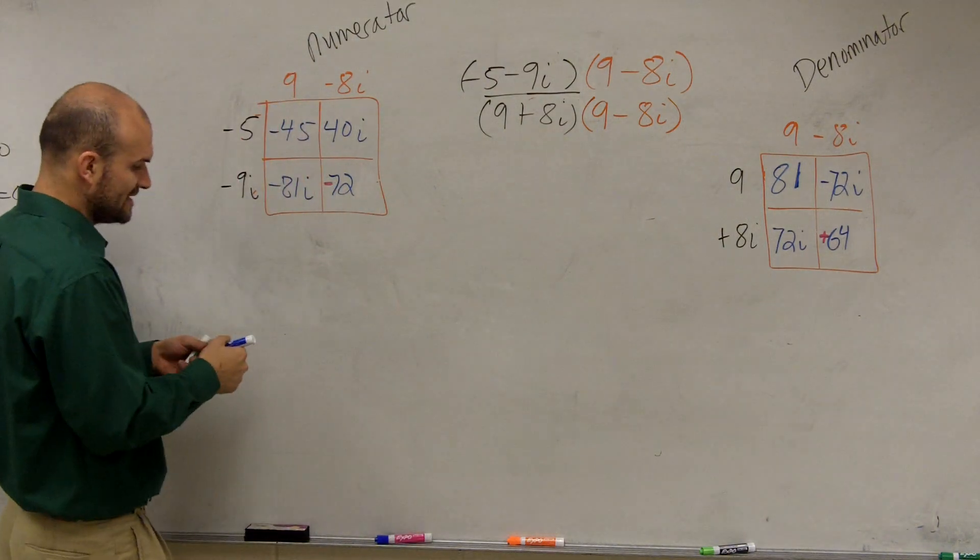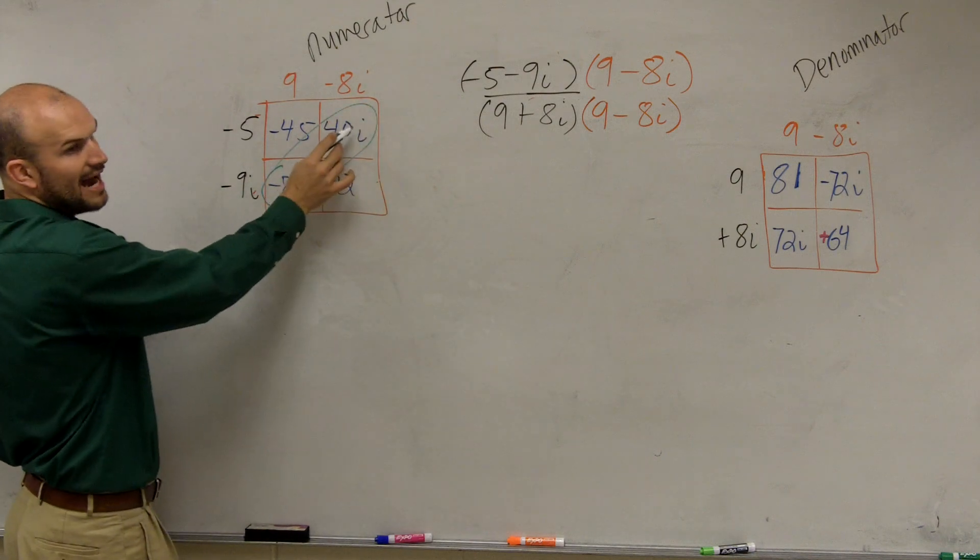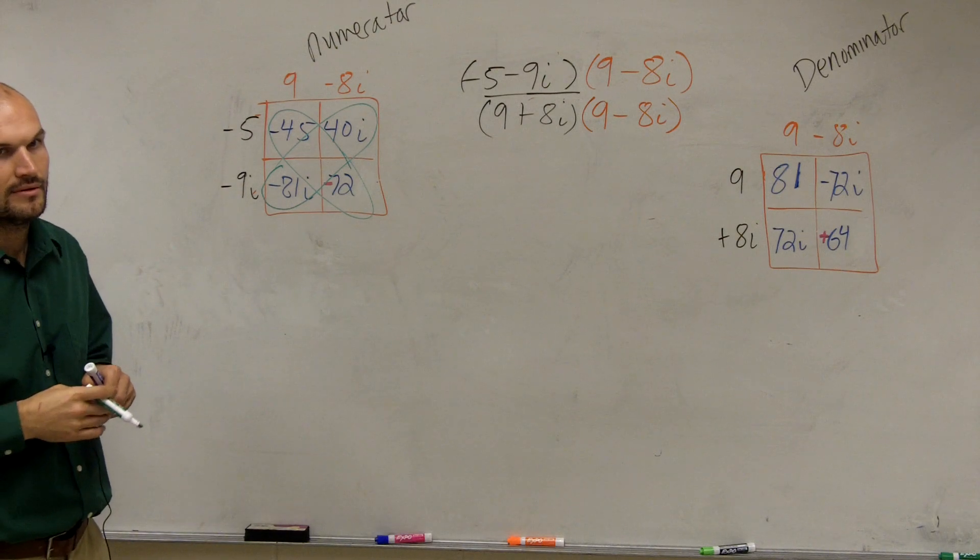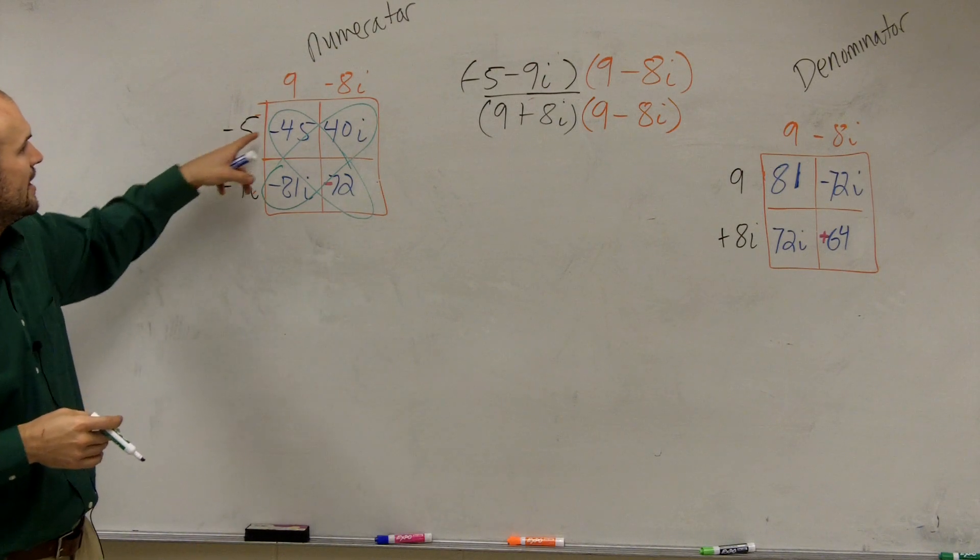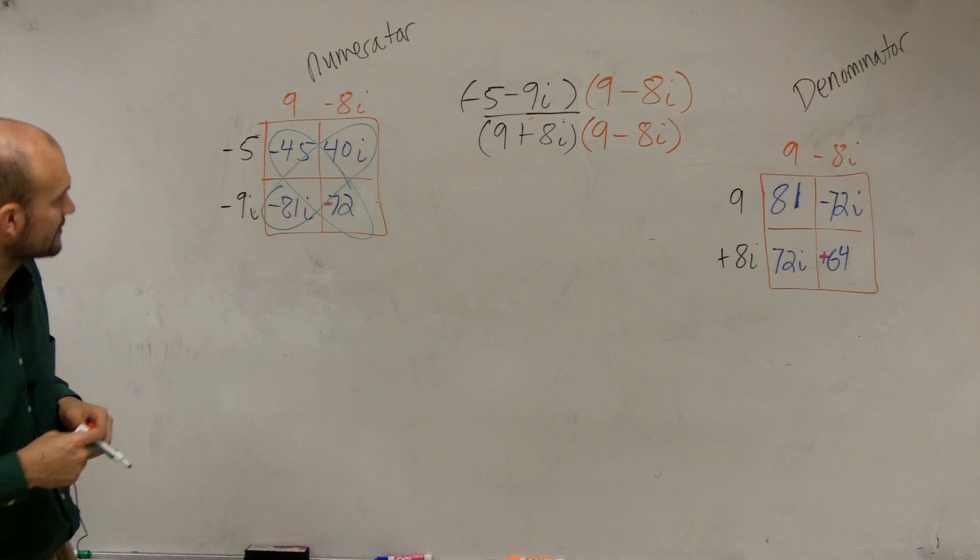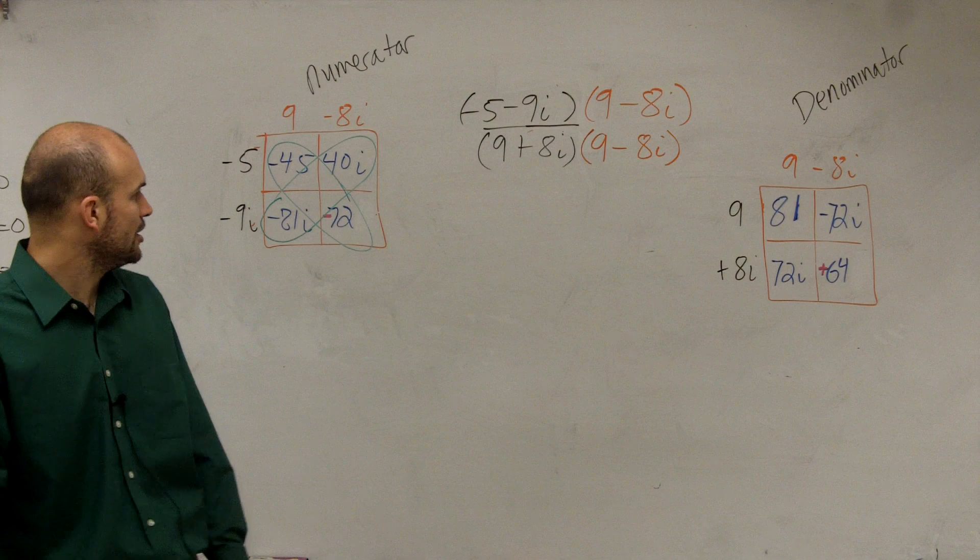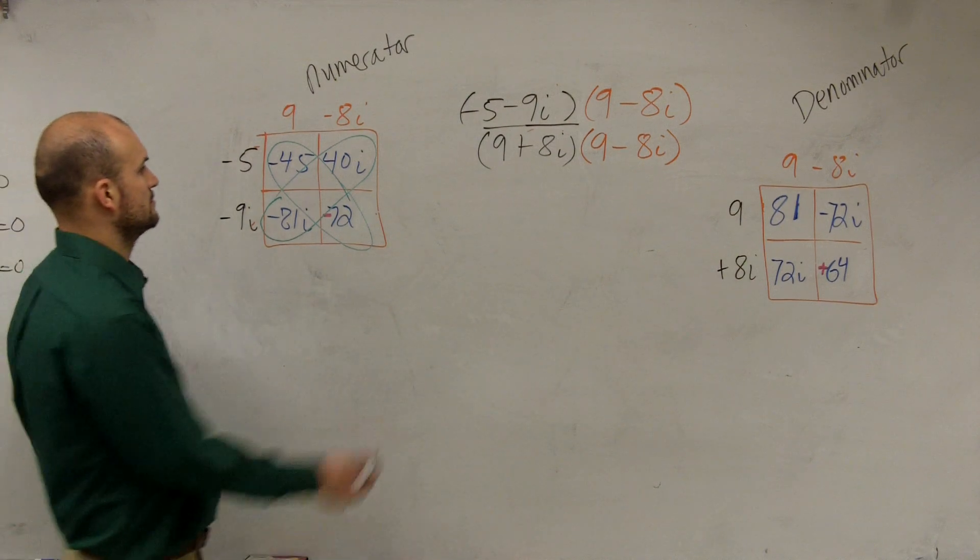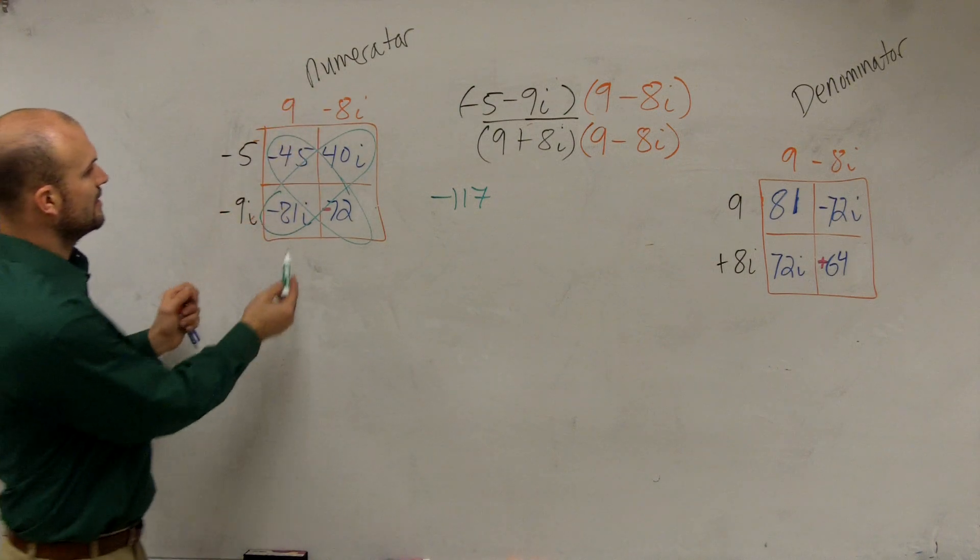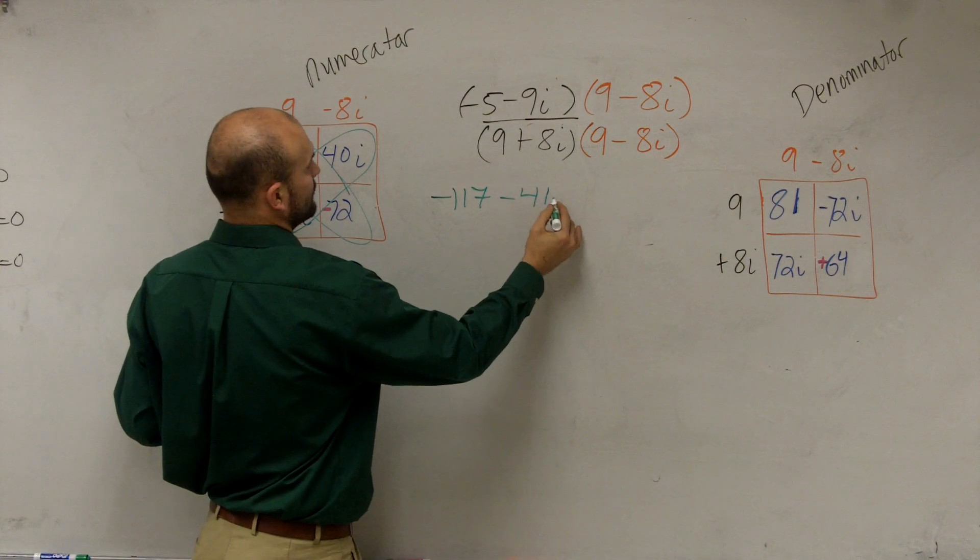So now let's combine like terms. Notice that these two terms both have an i, so we can combine them. And these two terms are just numbers, so we can combine them. All right? So we have negative 45 and then negative 45 minus 72. So what we'll do is we'll just go ahead and add 30, it'd be 102, and then it'd be 117. And remember, this is the numerator. So we have 117 and then negative 81i plus 40 is going to be minus 41i.